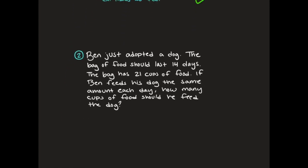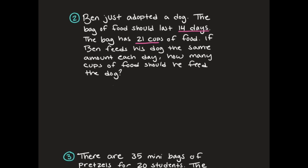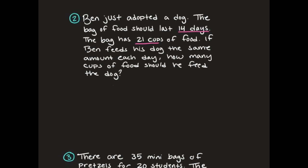Moving on to question number two. Ben just adopted a dog. The bag of food should last 14 days. The bag has 21 cups of food. If Ben feeds his dog the same amount each day, how many cups of food should he feed his dog? I'm thinking about what is this math problem. I have 14 days and 21 cups of food. I always ask myself, what is the object that I have? I have 21 cups of food. And what am I dividing it by? I am dividing it by 14 days.